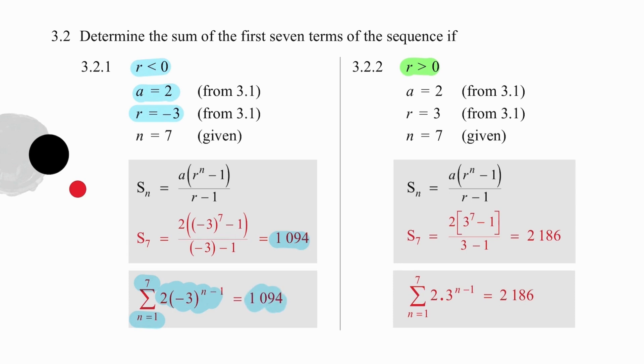The second example is very similar, the only difference being that r is positive, so we substitute again into the same formula. This time we get 2,186, and again, just for practice, we can write down the sigma notation statement with a general term and give the result, because we know that the result is 2,186.